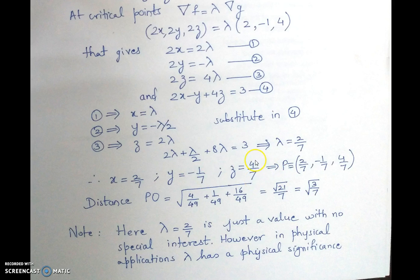Thus we have found the point P of the type (2/7, -1/7, 4/7). And we have found a single solution. So this is the only point where the minimum occurs.